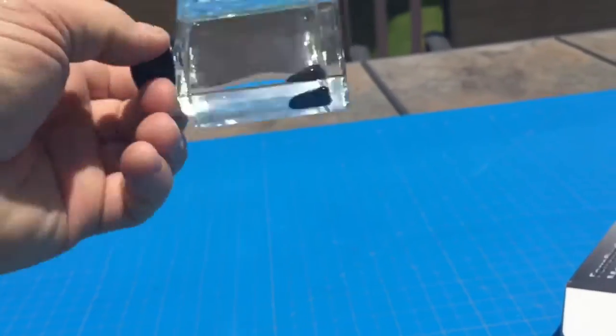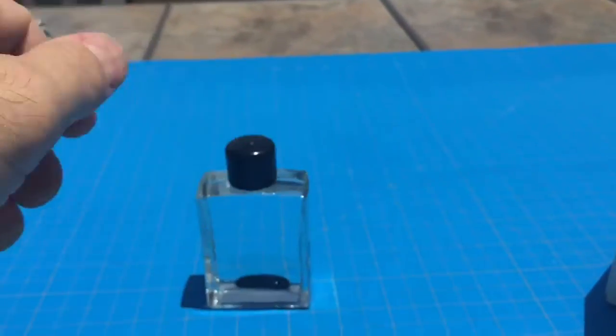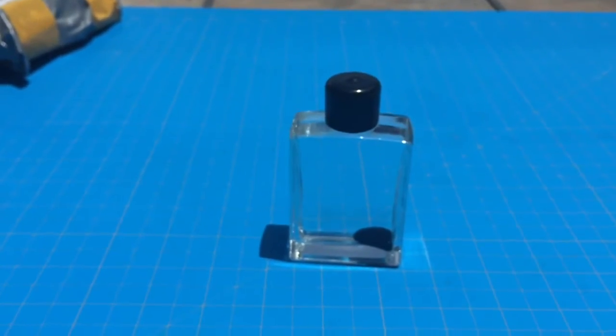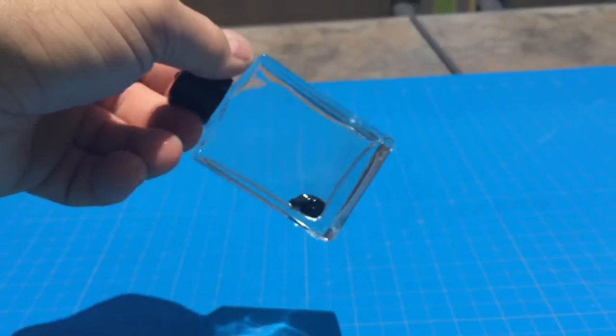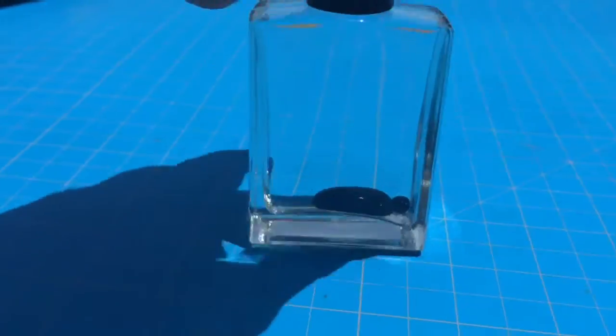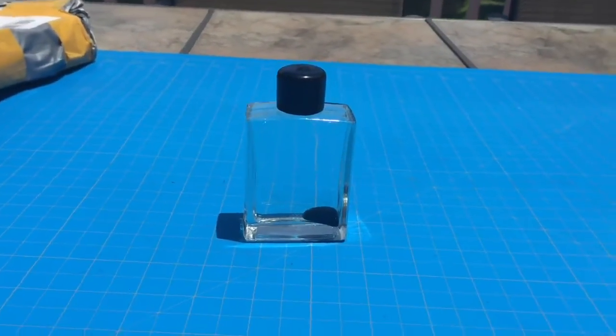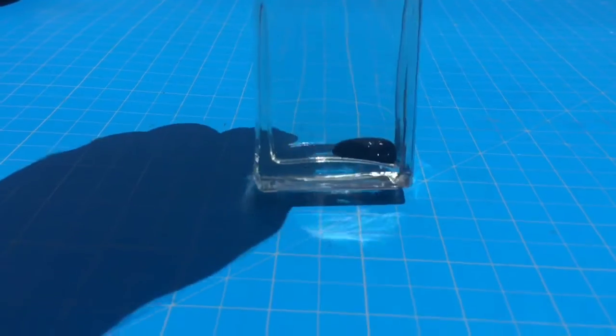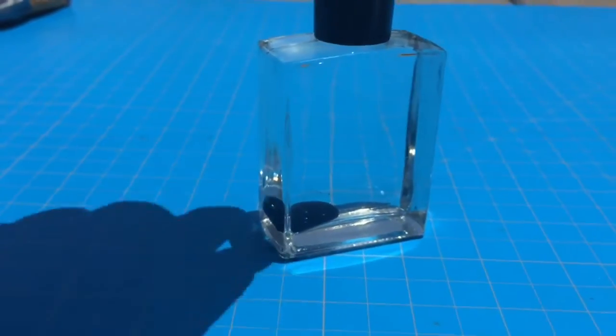So I've read that the spikes lessen over time. Now the pure ferrofluid that we have in a jar is a year old and the spikes never decreased, but it's not in a suspended solution like this.